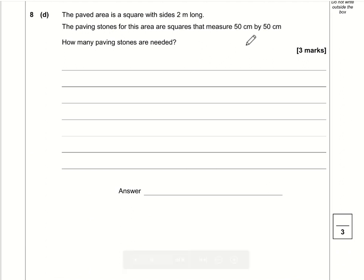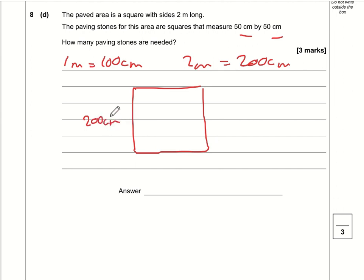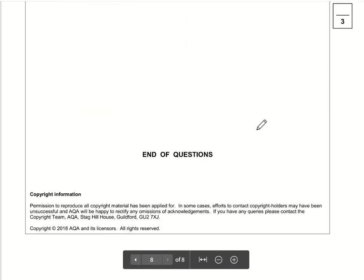The problem here is we're dealing with centimeters and meters. A meter is 100 centimeters, so 2 meters is 200 centimeters. If this is 200 centimeters, how many 50s go into 200? 200 divided by 50 is 4, so we have 1, 2, 3, 4 squares along one dimension and 1, 2, 3, 4 along the other. In total we'll have 4 times 4 which is 16 paving stones, and that is the end of this particular test.